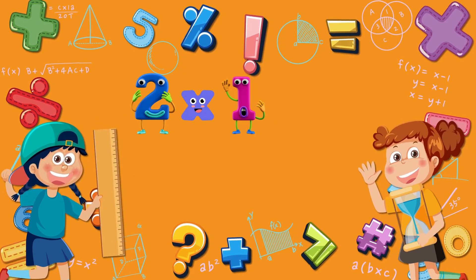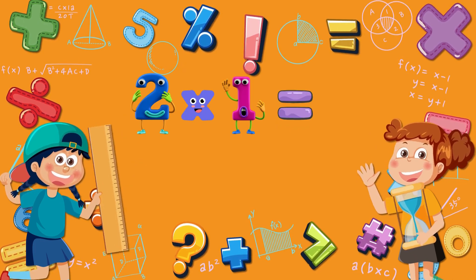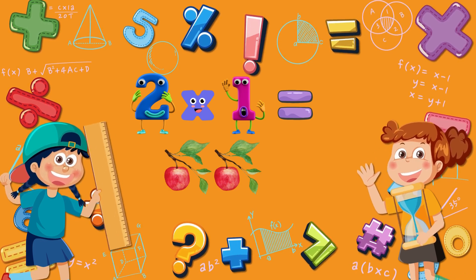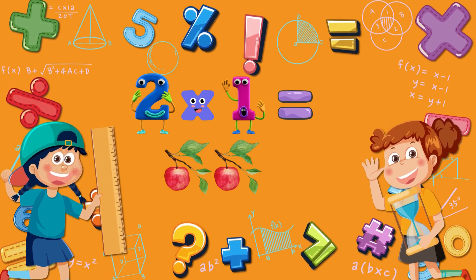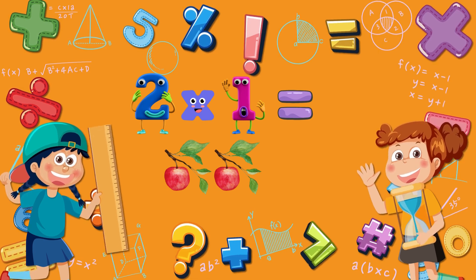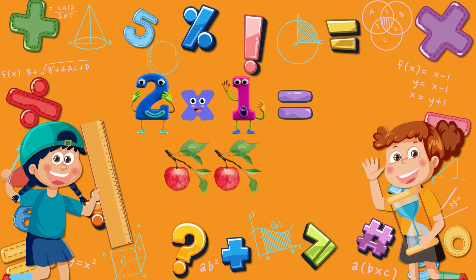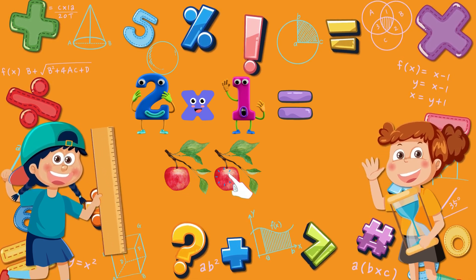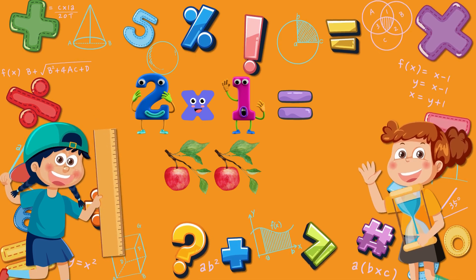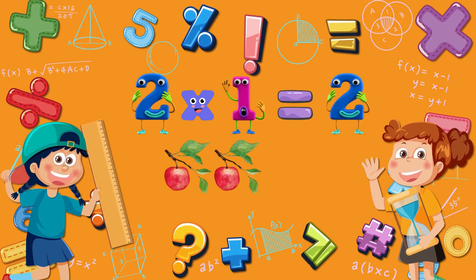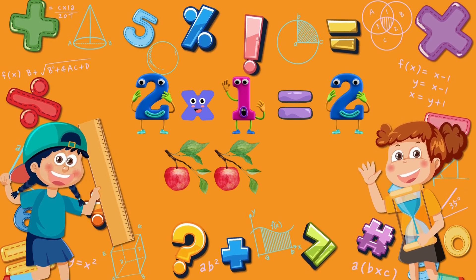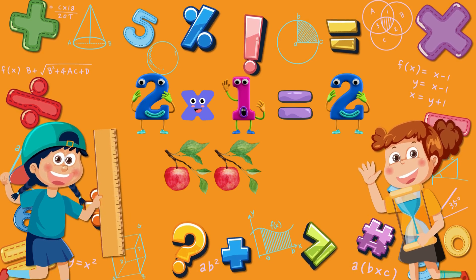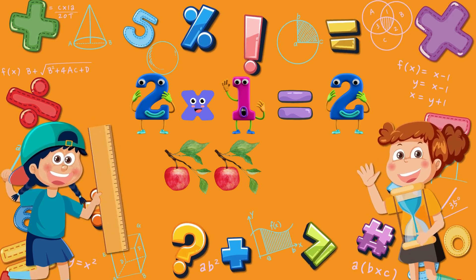Two times one is equal to? Two branches appear, each with one apple. Let's count together. One apple on the first branch, and one apple on the second branch. One plus one is equal to two. Two. Great. Two times one is equal to two.